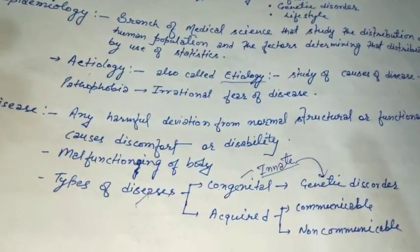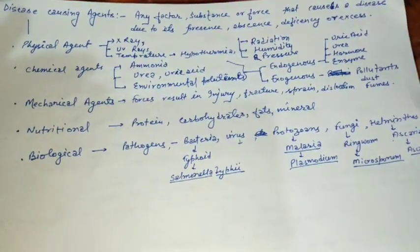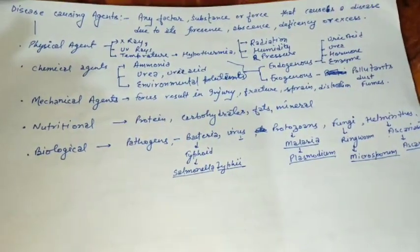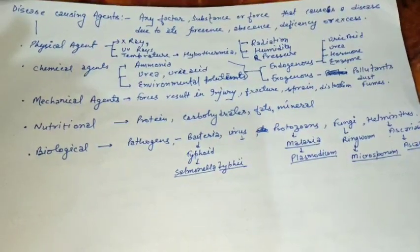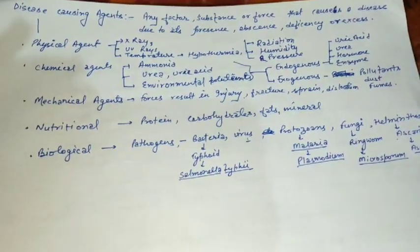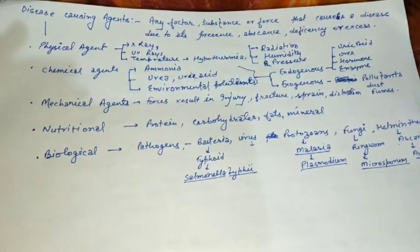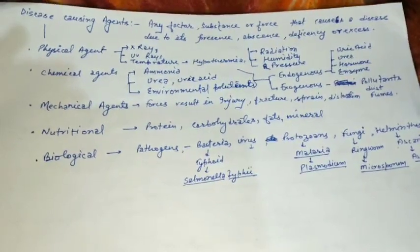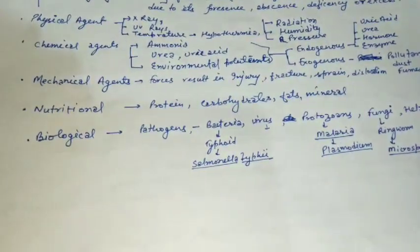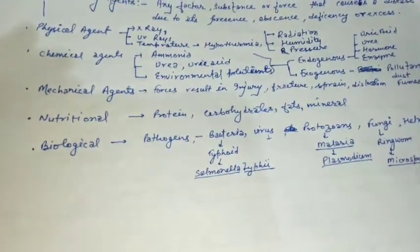Now we talk about disease-causing agents. Disease-causing agents are any factor, substance, or force that causes a disease due to its presence, absence, deficiency, or excess. For example, a pathogen like bacteria causes disease, and the absence of vitamins or proteins in the body can also cause disease.